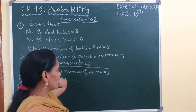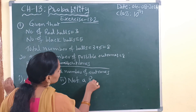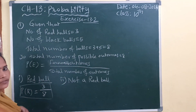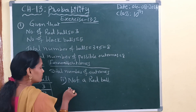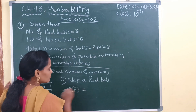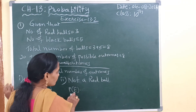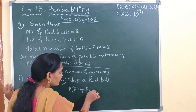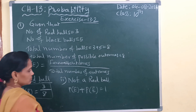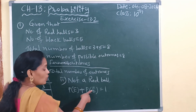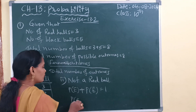Next, the second part — we need to find out probability of getting not a red ball. For this, we know the formula. A very important formula: probability of getting an event plus probability of getting not an event is equal to 1. From this, we need to find P of E bar. P of E bar is equal to 1 minus P of E.